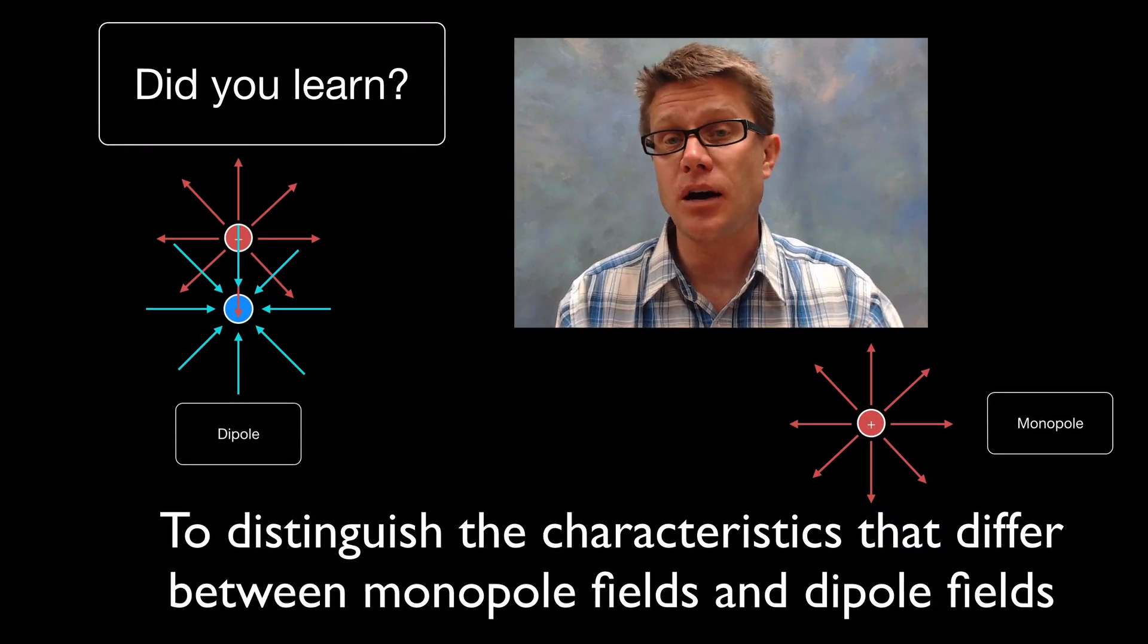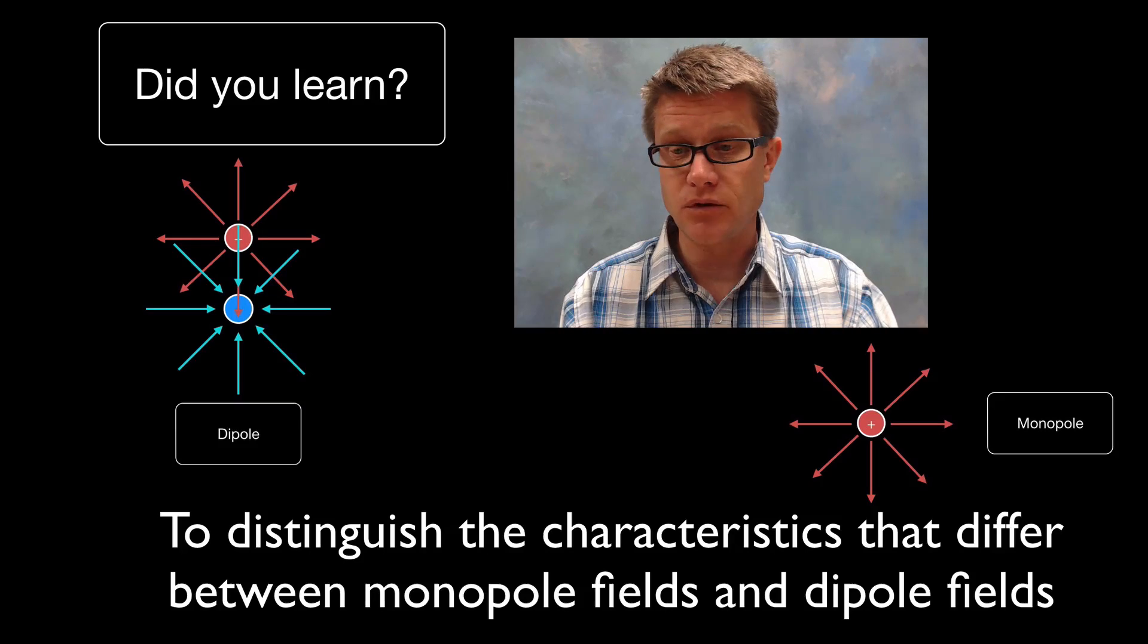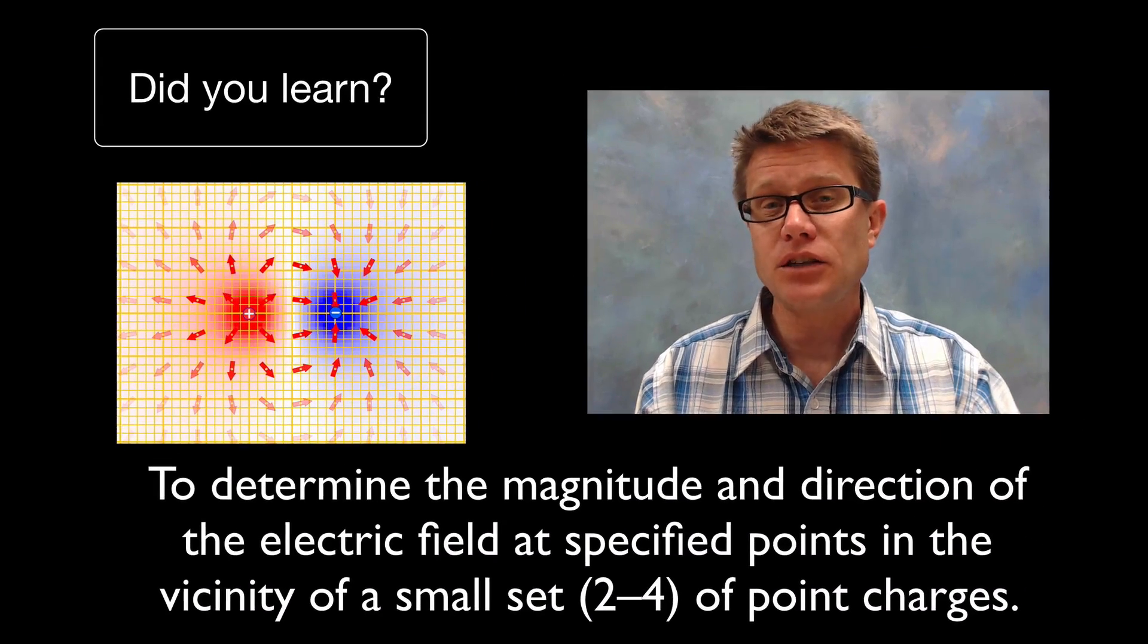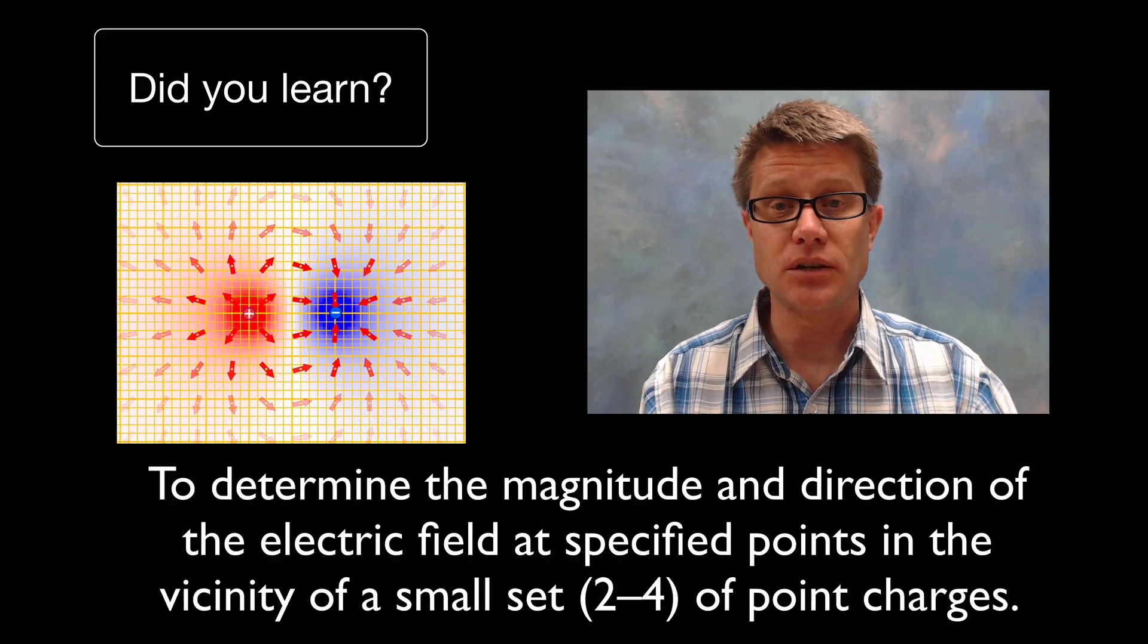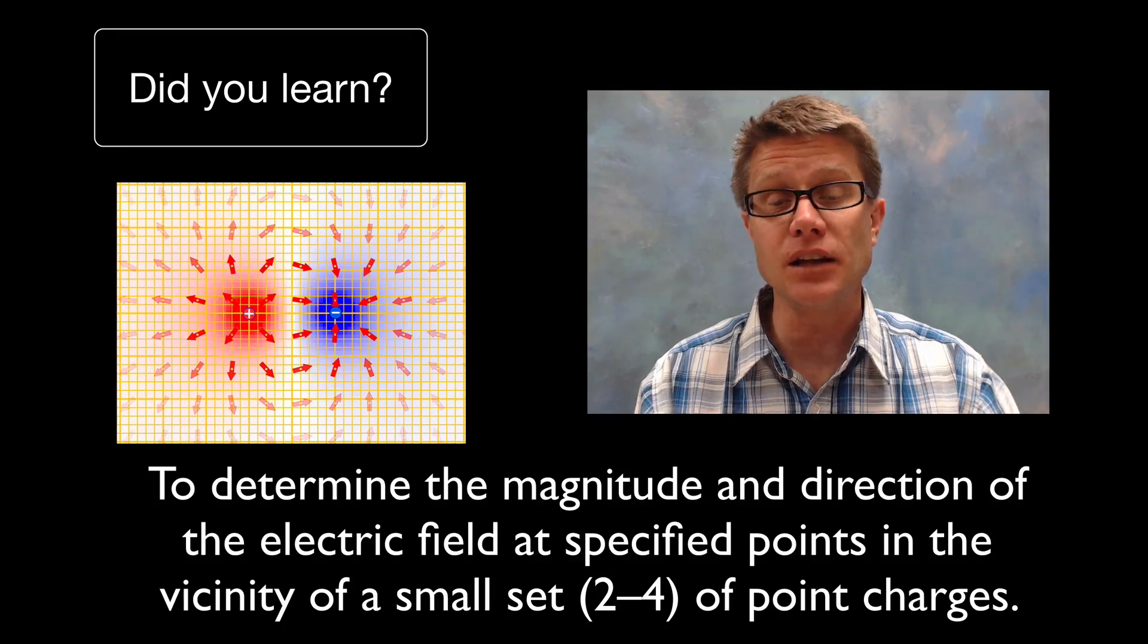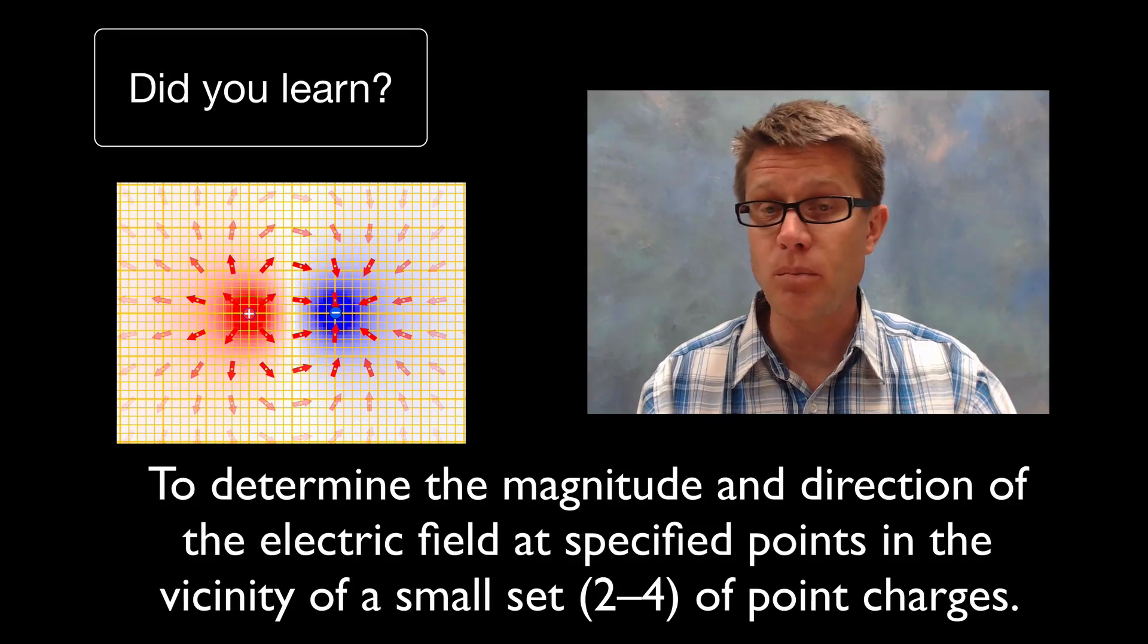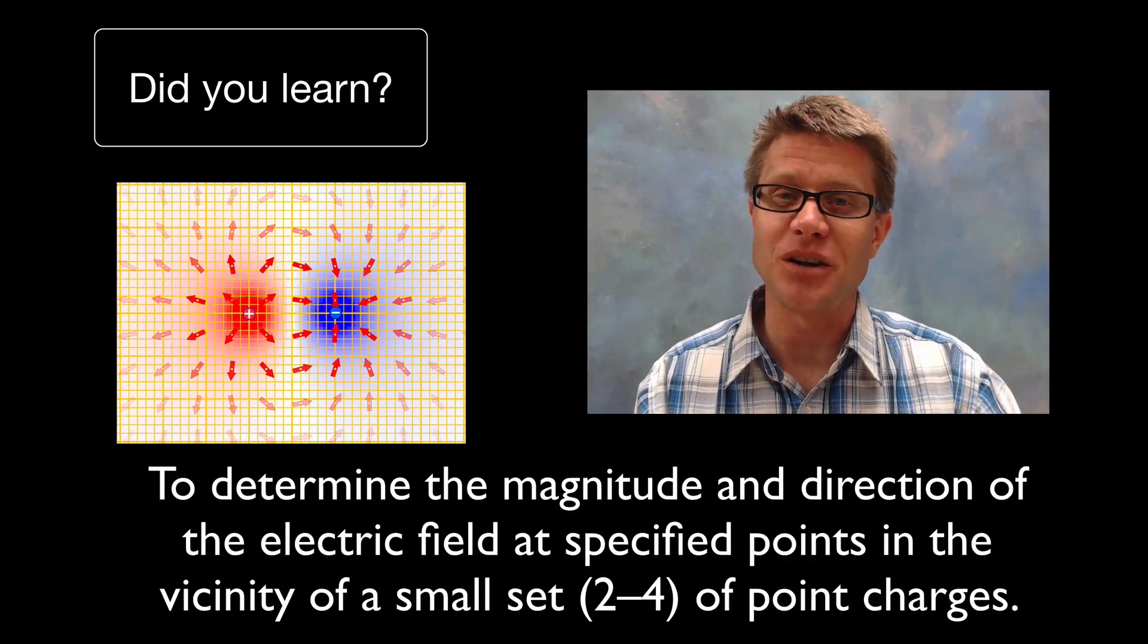Did you learn to distinguish between a monopole, that's when we just got one point or one sphere, and a dipole? And then finally, did you learn how to use vector addition to figure out the magnitude of the net electric field on up to four points? I hope so, and I hope that was helpful.